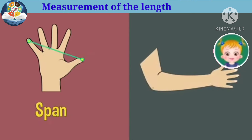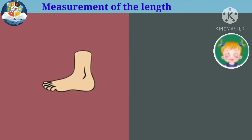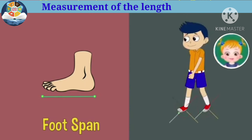The distance between the elbow and the tip of the middle finger is a cubit. The distance between the tip of the big toe and the end of the ankle is a foot span. The distance covered during a single step while walking is a pace.